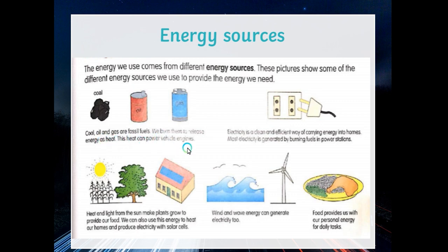Coal, oil, and gas are fossil fuels. We burn them to release energy as heat. This heat can power vehicle engines. In the olden days, trains used coal, but now they're powered by electricity. Most cars use oil and fuel.